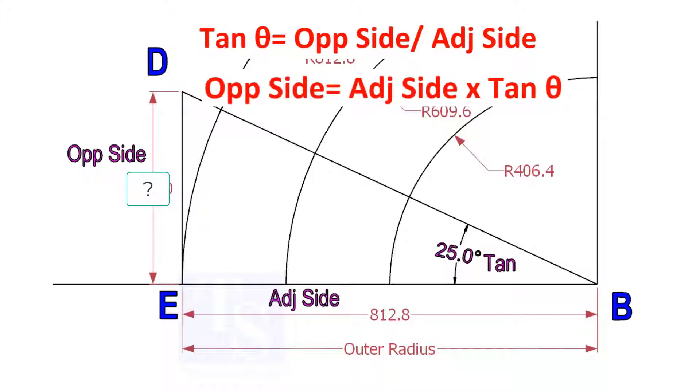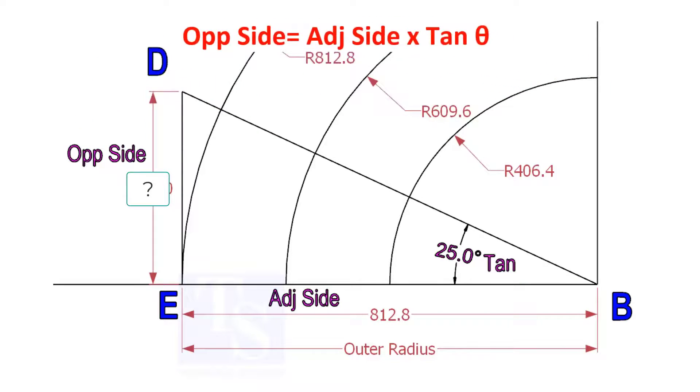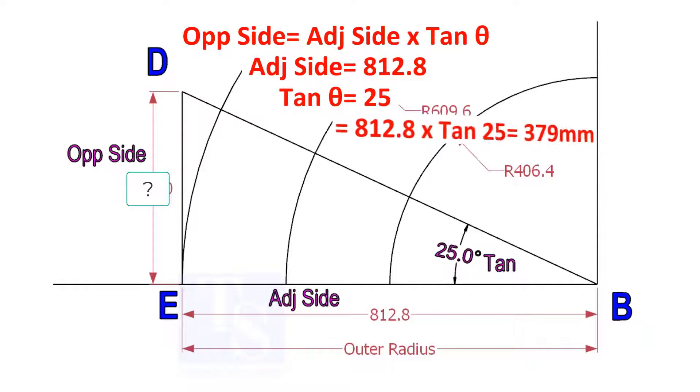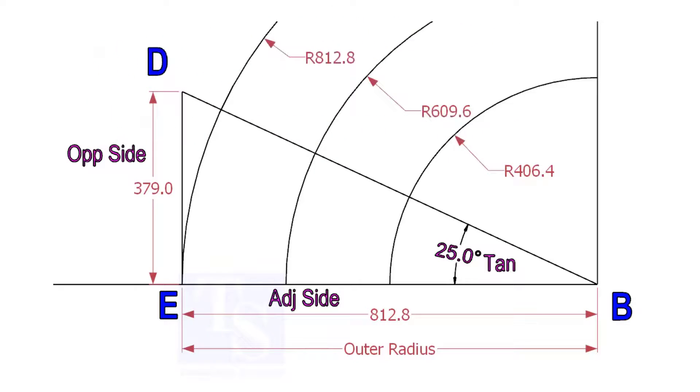Opposite side equals adjacent side multiplied by tan theta. 812.8 times tan 25 equals 379 millimeters. Draw the line ED vertically and the slant line DB. I hope now you will be able to draw a line in any degree.